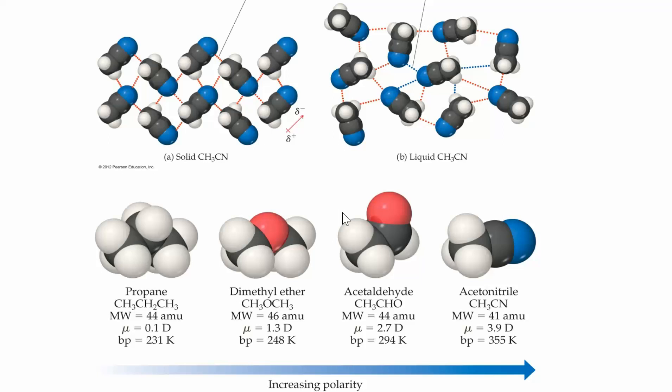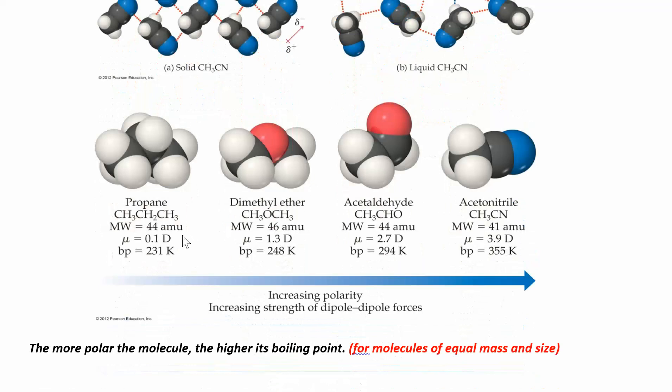You need to be able to distinguish between something that's polar or non-polar. If two molecules are about the same size and have about the same mass, the polar molecule is going to have a higher boiling point because dipole-dipole interactions are stronger than London forces. London forces are the weakest, then dipole-dipole, and then there's a specific type called a hydrogen bond — we'll get to that next.